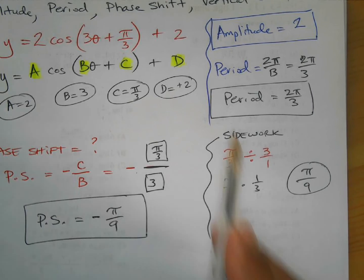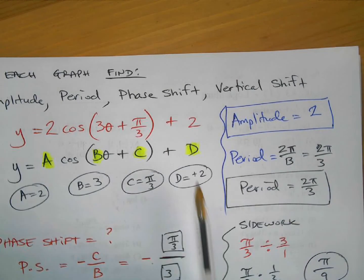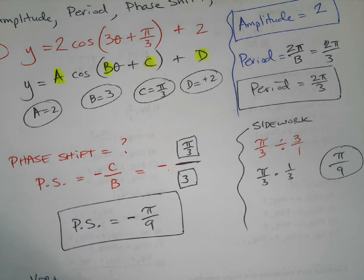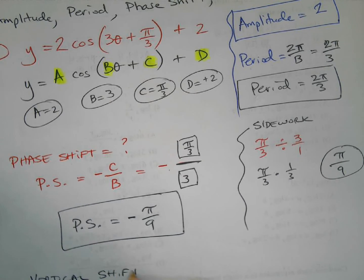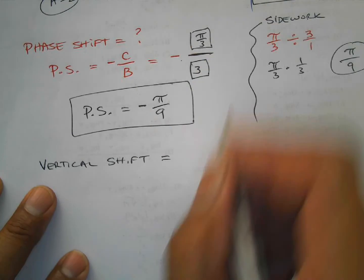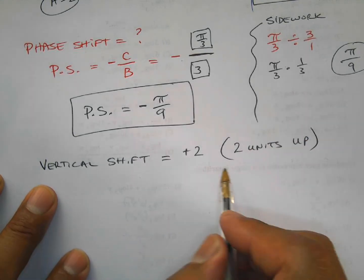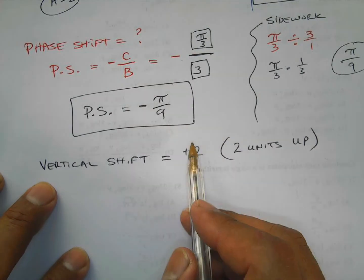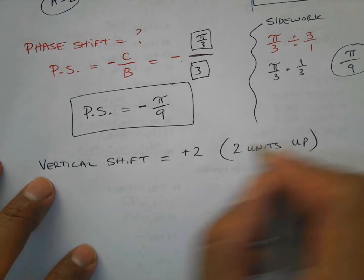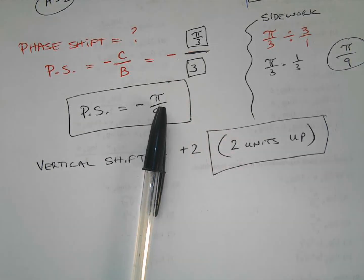And finally, the vertical shift is just the d value. Since d equals 2 — a positive 2 — the vertical shift is 2 units up. Positive means the graph moves up; negative would mean it moves down — just think of it like an elevator: up two levels is positive two, down two levels would be negative two. We'll do the next two problems in the next video.